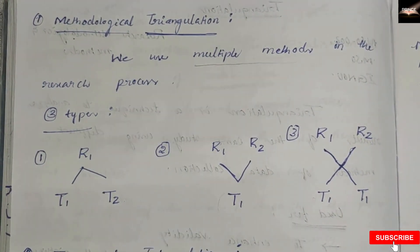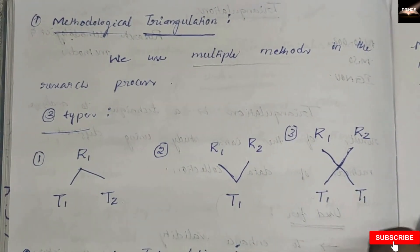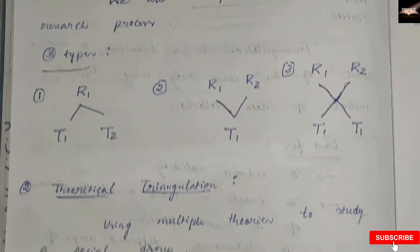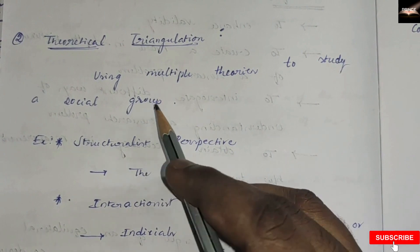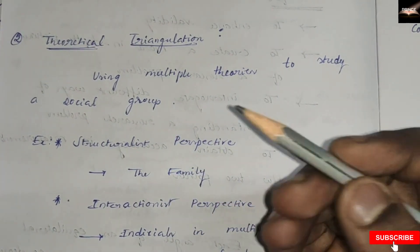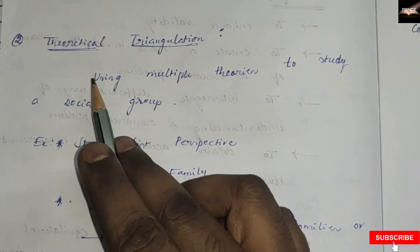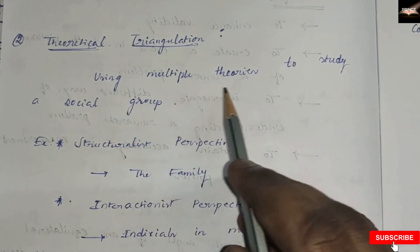The final picture from methodological triangulation is using multiple methods to collect data and analyze them. Coming to theoretical triangulation, this involves using multiple theories to study a social group.